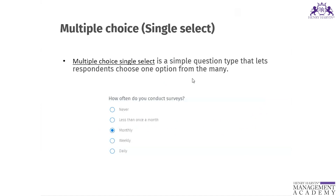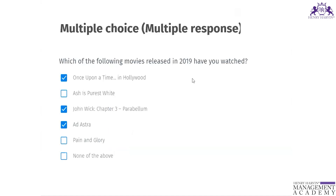When creating a survey there are different kinds of questions. One is multiple choice single select — you have a question and multiple responses but can choose only one option. Another is multiple choice multiple response — you have a question and can select multiple responses. For example: 'Which of the following movies have you watched?' allows multiple responses.